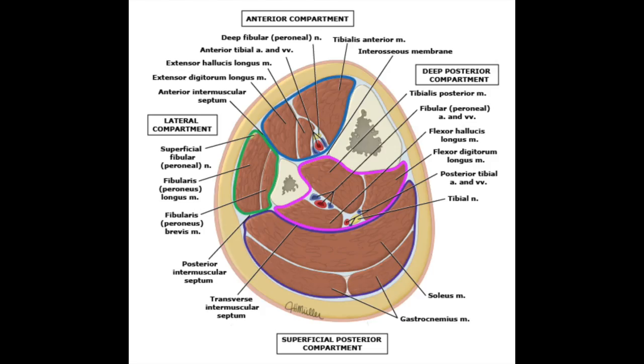Compartment syndrome can occur in any anatomic compartment bound by fascial membranes. The lower leg is going to be the most common site and is comprised of four compartments: the anterior compartment, the superficial posterior compartment, the deep posterior compartment, and the lateral compartment. Within the anterior compartment, you have the anterior tibial artery and the peroneal nerve. Within the deep posterior compartment, you have the peroneal and posterior tibial artery as well as the tibial nerve. You can start to imagine how increased pressures in these regions can cause compression to vital arteries and nerves.